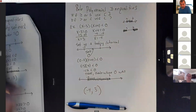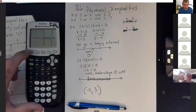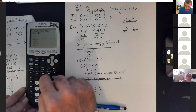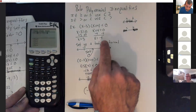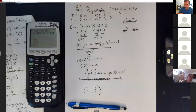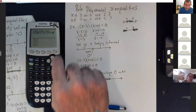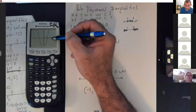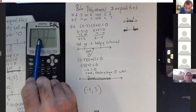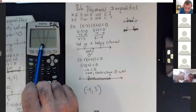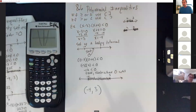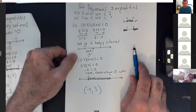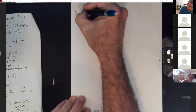On the calculator, go to y equals, enter (x − 3)(x + 4), and graph it. Since it's less than zero, we're looking for whatever is under the x-axis. That section is underneath starting at x = −4 and stays under until x = 3, confirming our answer. This section is pretty small — I think there are only about six or seven questions.